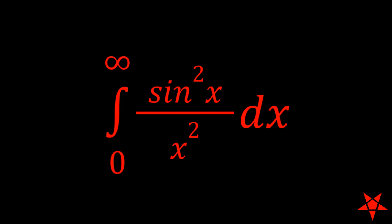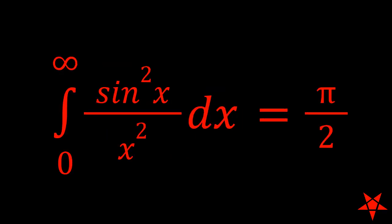Welcome back to Pentagram Prime, everyone. Today we will be looking at the real improper integral of sine squared x over x squared from zero to infinity. Specifically, we're here to prove that it is equal to pi over 2.